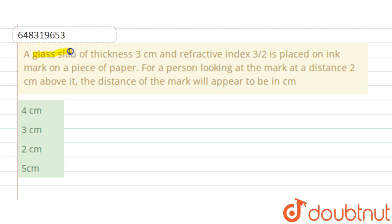Hello, should I answer the question is: A glass slab of thickness 3 cm and refractive index of 3 by 2 is placed on an ink mark on a piece of paper. For a person looking at the mark at a distance 2 cm above it, the distance of the mark will appear to be in cm.